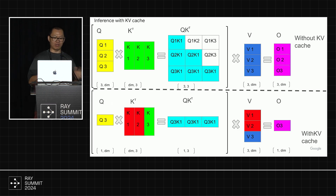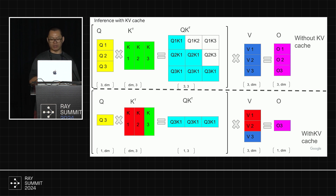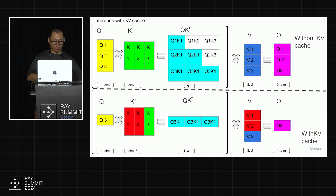KV cache is one optimization to save redundant computation. I'll give the comparison: on the first half, you do the compute without KV cache; on the bottom side, we reuse the KV cache. You can see the difference — without KV cache, even if your current token is Q3, you still need to process all the previous tokens. But with KV cache, we only need to process the Q3 token. So this saves a lot of computation.